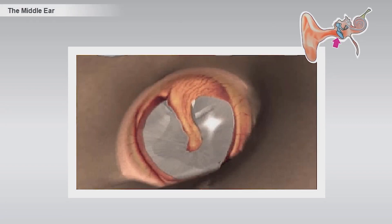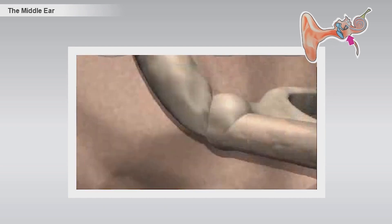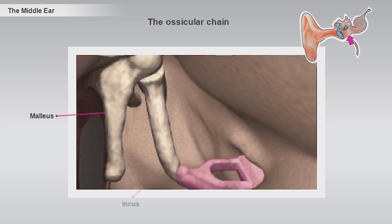The sound now continues into the middle ear, which is parted from the ear canal by the eardrum. The middle ear is a small air-filled cavity in the temporal bone. The middle ear contains the ossicular chain, which consists of the three smallest bones in our body: the malleus, the incus, and the stapes.